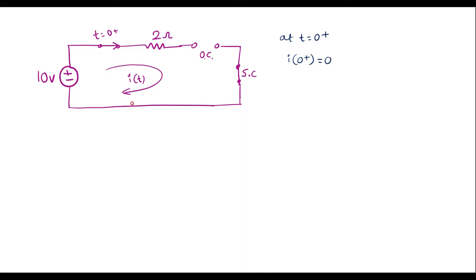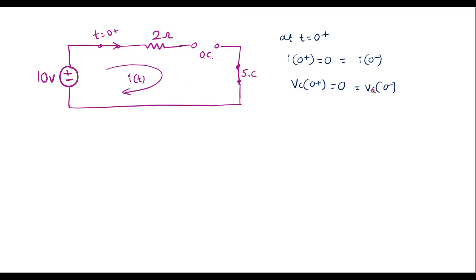Similarly, when I of 0 plus is 0, the voltage across the capacitor is 0. That is, Vc of 0 plus is equal to 0. Before closing the switch, the initial current was 0, so I of 0 minus equals I of 0 plus. Similarly, Vc of 0 minus is equal to Vc of 0 plus, which is also 0.